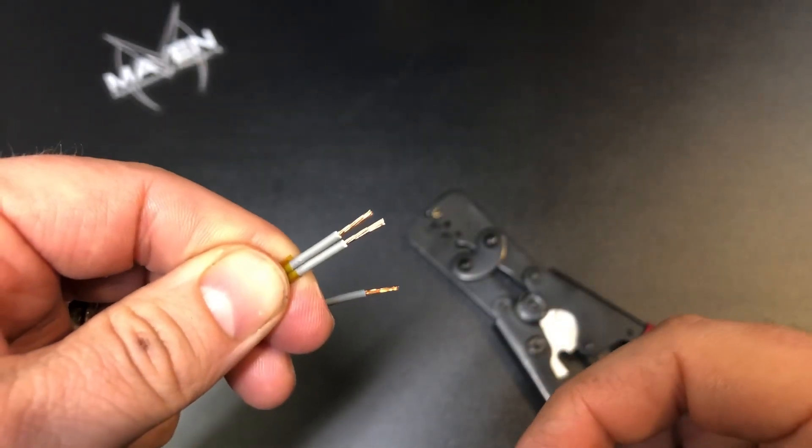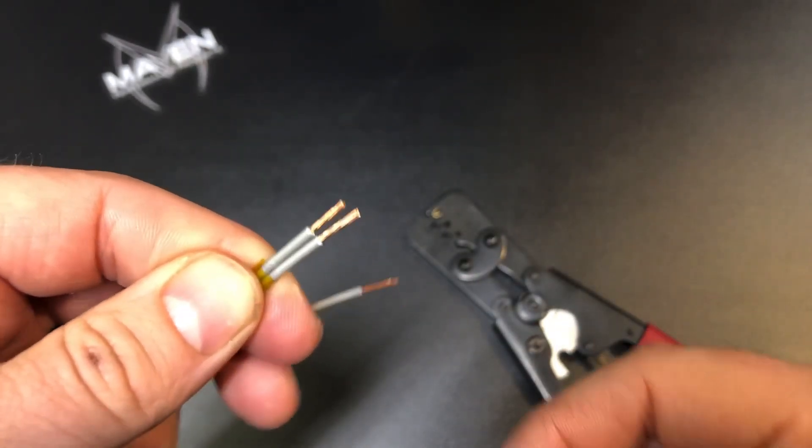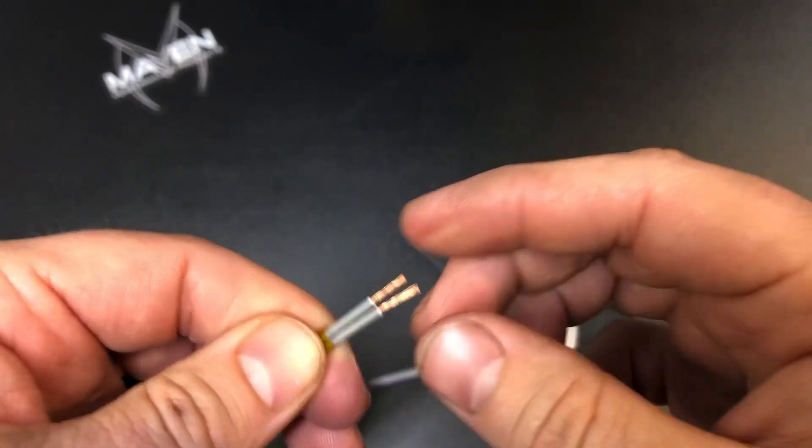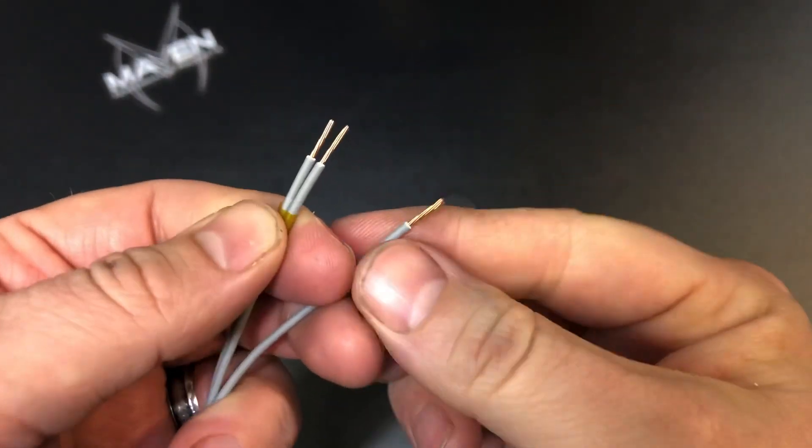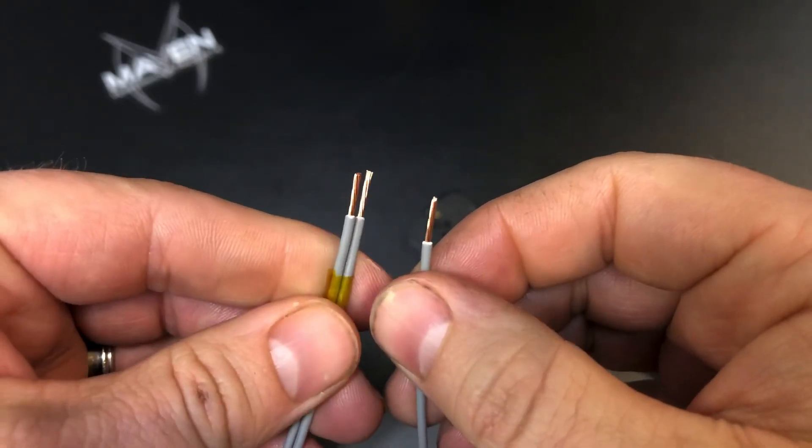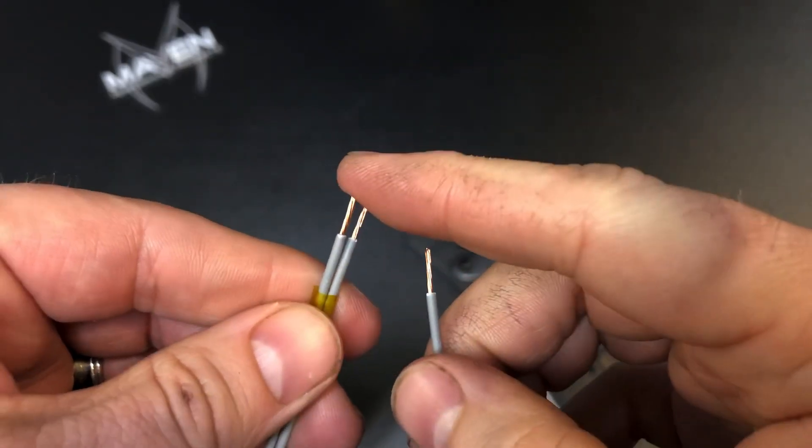So don't twist these together, but if you need to give each individual wire a little bit of a twist, I find that that's helpful in keeping things from getting too rowdy when you're putting them into the splice.